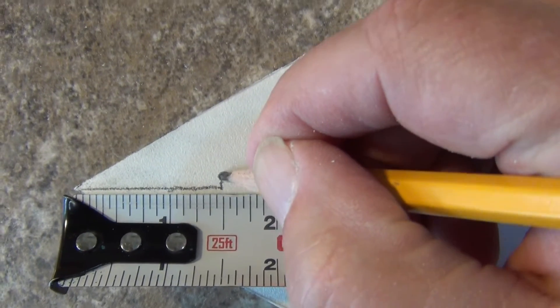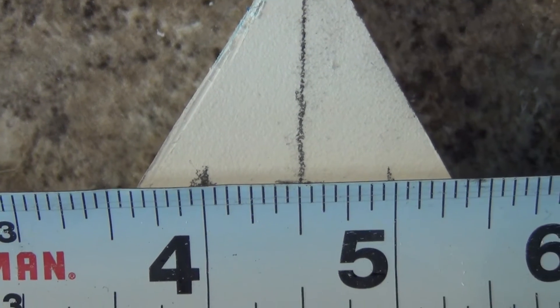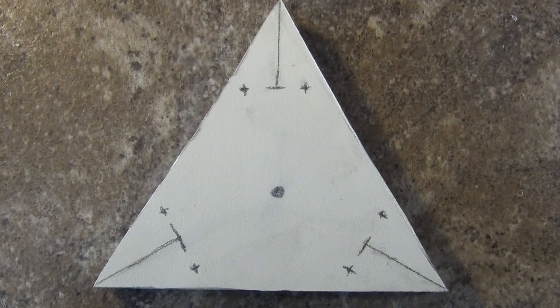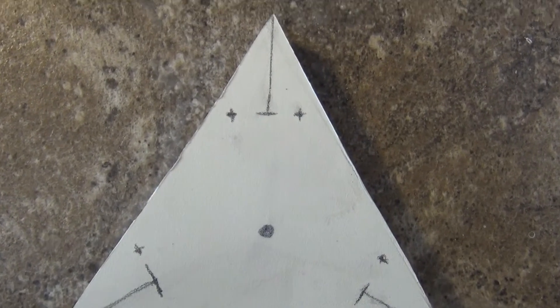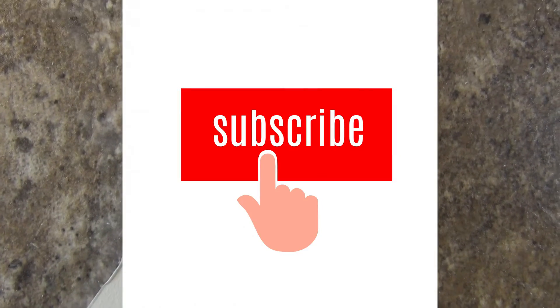Next, I measure down from the triangle point 1 and 1 half inches and make a mark 1 half inch on either side of the line. I repeat this for the other two angles. If you're enjoying this video, then please don't forget to subscribe to my channel.